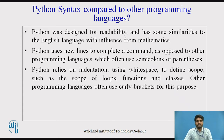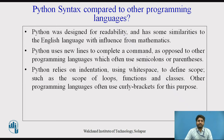Python syntax compared to other programming languages: Python was designed for readability and has some similarities to the English language with influence from mathematics. Python uses new lines to complete a command, as opposed to other programming languages which often use semicolons and parentheses. Python relies on indentation using white space to define scope, such as the scope of loops, functions, and classes. Other programming languages often use curly brackets for this purpose.